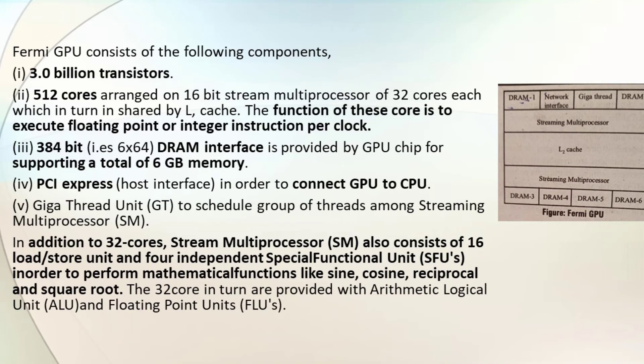A GPU architecture includes DRAM, network interface, threads, multiprocessors, cache, and streaming processors. A typical GPU contains 3 billion transistors, 512 cores, and 16 streaming multiprocessors.